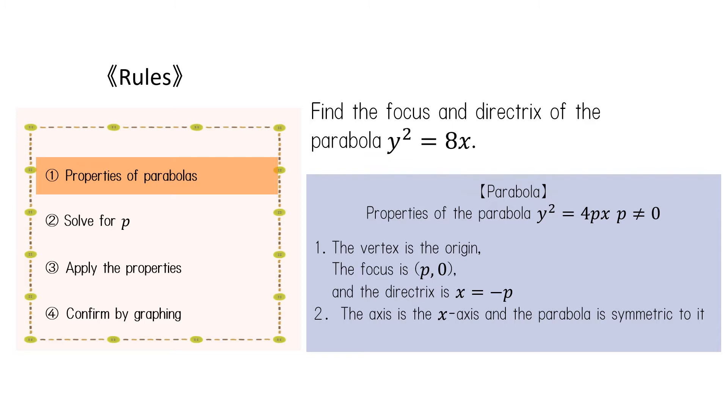The vertex passes through the origin, the focus is the point (p, 0), and the directrix is the line x equals negative p. The axis is the x-axis and the parabola is symmetric to it.